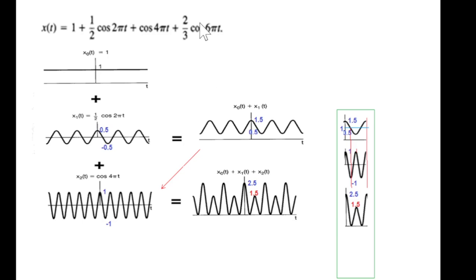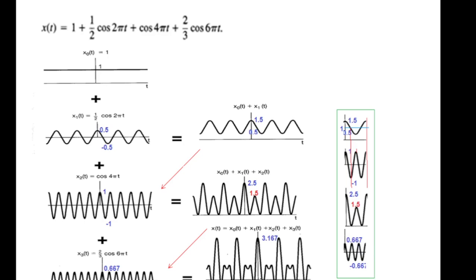Now with that we have to use the cos 6πt signal. Cos 6πt signal amplitude has 2 over 3, that is 0.667. If we add 0.667 with 2.5, we get 3.167. Similar signal, but this is very difficult to manually plot.